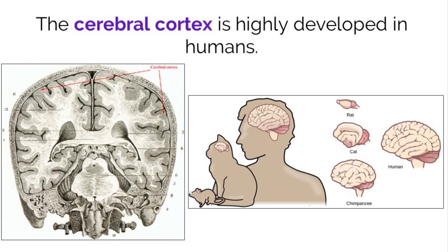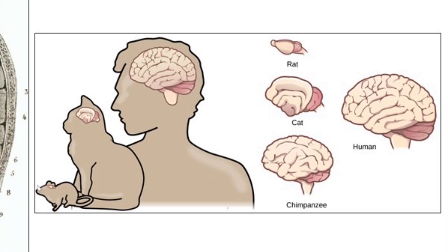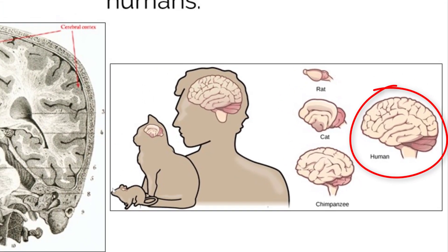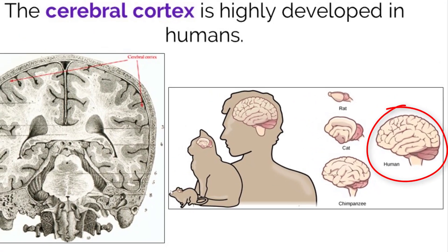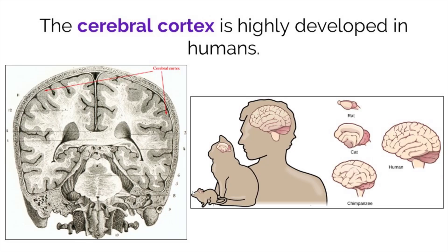Take a quick look at the brains of the rat, cat, and chimpanzee. While there are a few folds, none of them can compete with the folds and surface area seen in the human brain. The cerebral hemispheres are known for producing higher-order thinking, which we think is one of the reasons why humans are the most intelligent organisms on the planet.